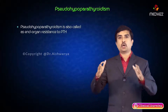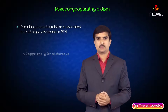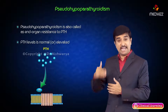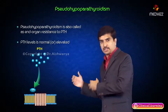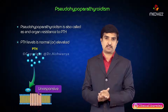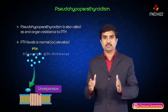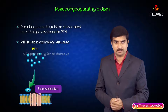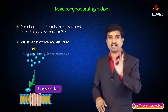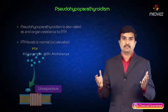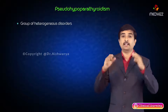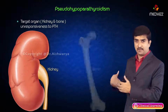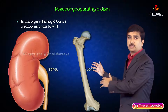Pseudo-hypoparathyroidism is also called end-organ resistance to PTH, which means PTH levels are normal or elevated but the PTH is acting on its receptors and the receptor is not showing any response on the target cell. The main culprit in pseudo-hypoparathyroidism is the PTH receptor, not the parathyroid gland. It refers to a group of heterogeneous disorders defined by target organs like the kidney and bone which are unresponsive to PTH.